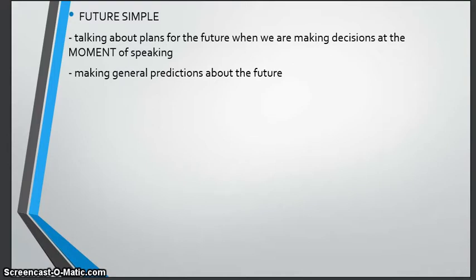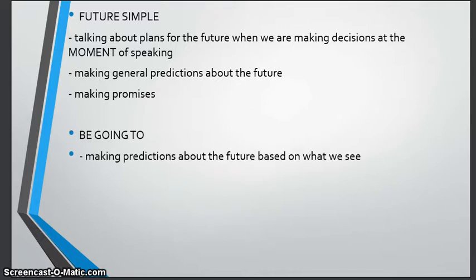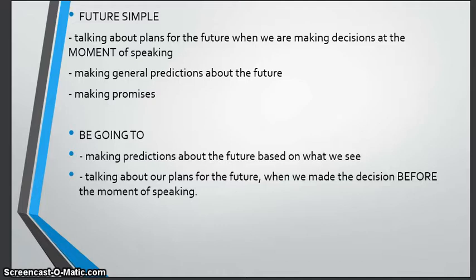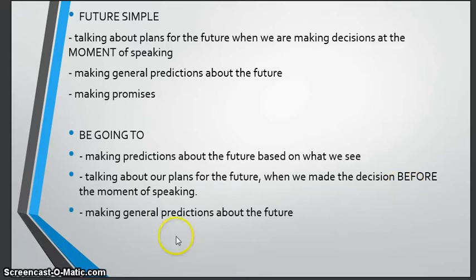Next we have future simple. We use it for talking about plans for the future when we made the decision at the moment of speaking, for making general predictions and guesses about the future, and for making promises. A similar form is 'be going to.' We use this for making predictions about the future based on what we see — for example, 'I see the clouds, I think it is going to rain' — and for plans made before the moment of speaking.